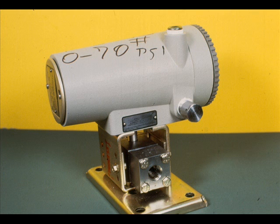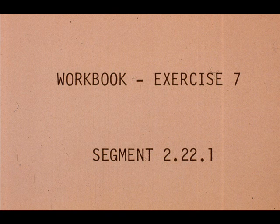This concludes the component identification and principle of operation study of a specific electronic motion balance transmitter. Now work exercise number seven in your workbook.